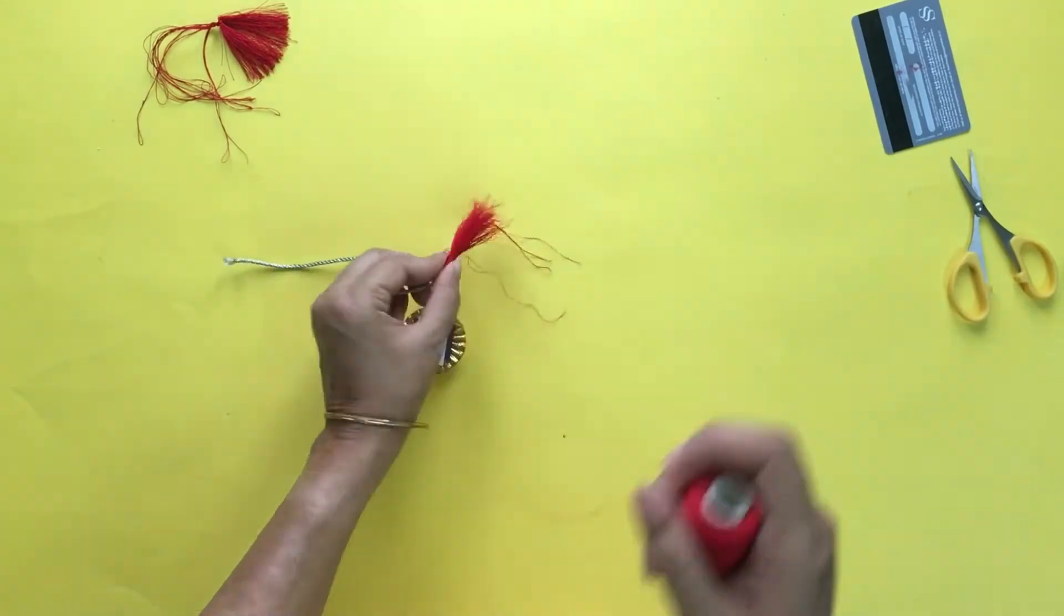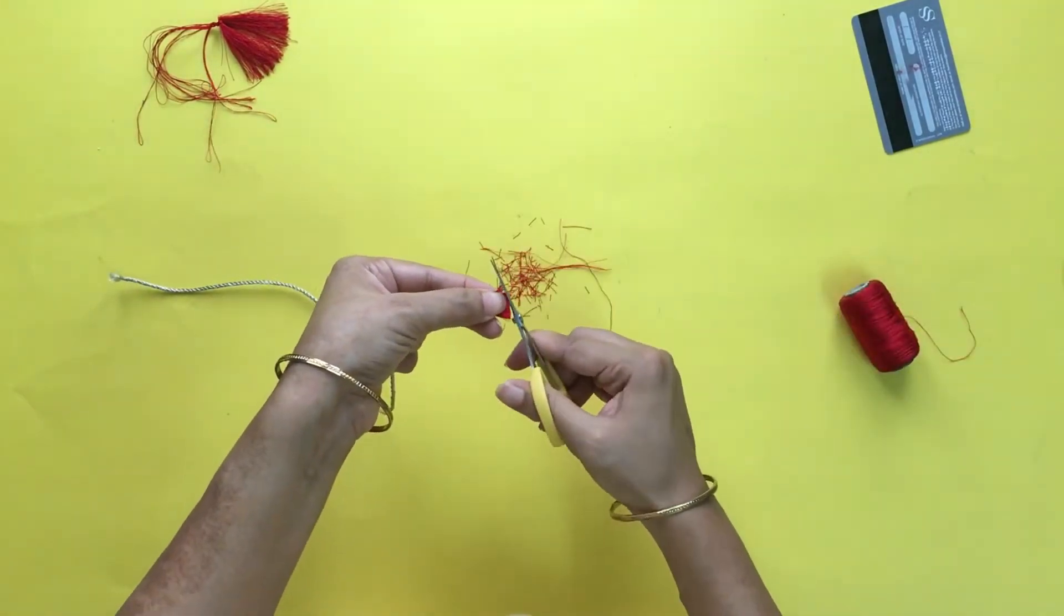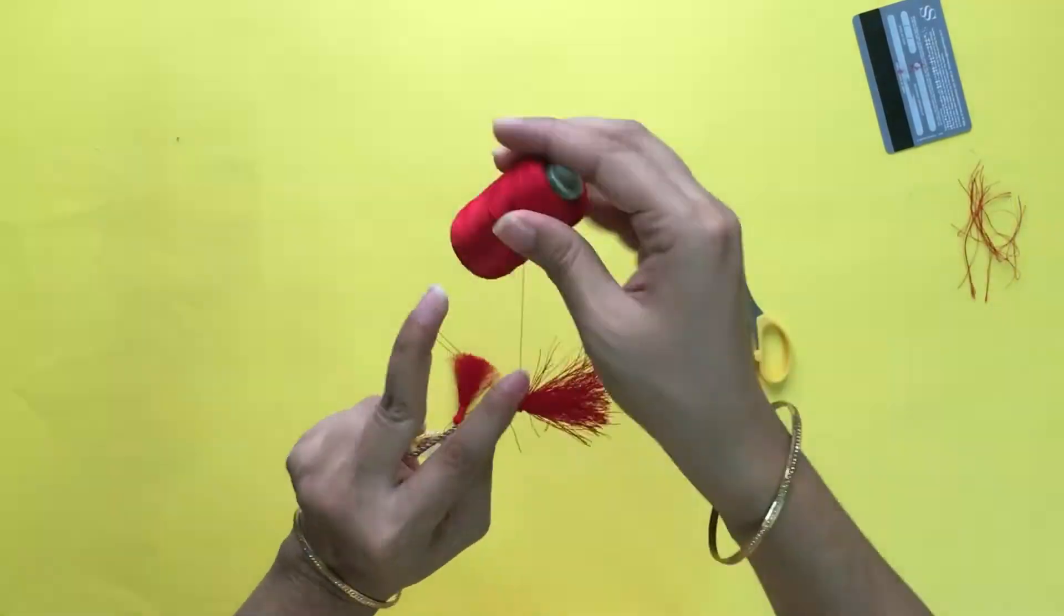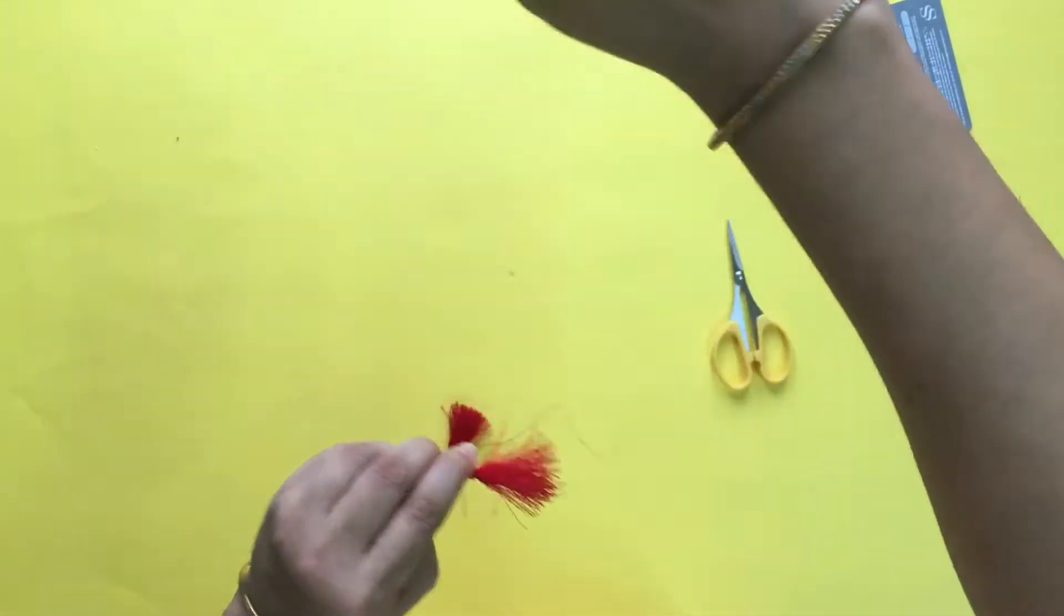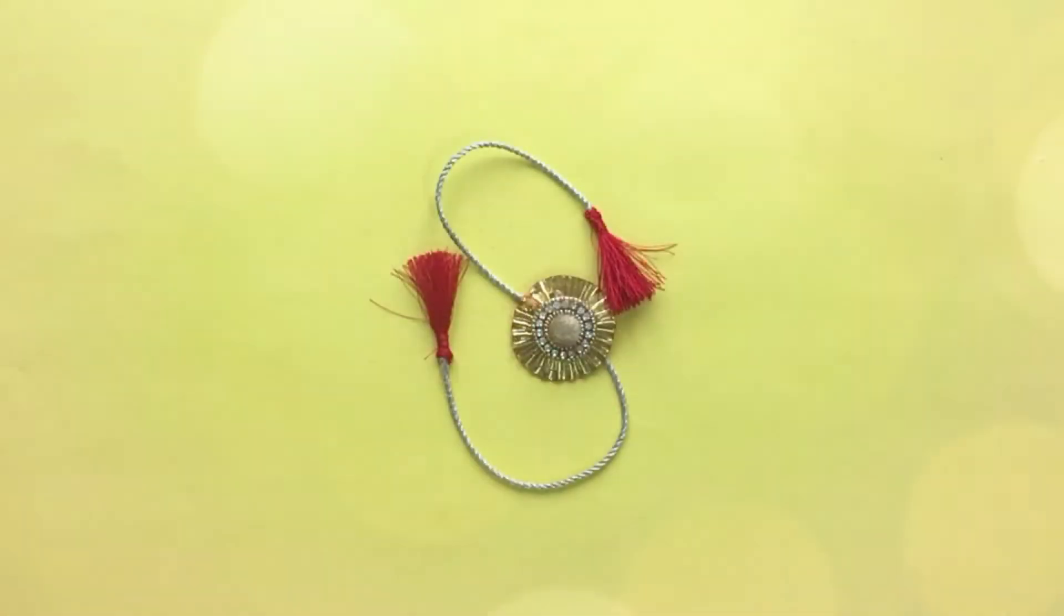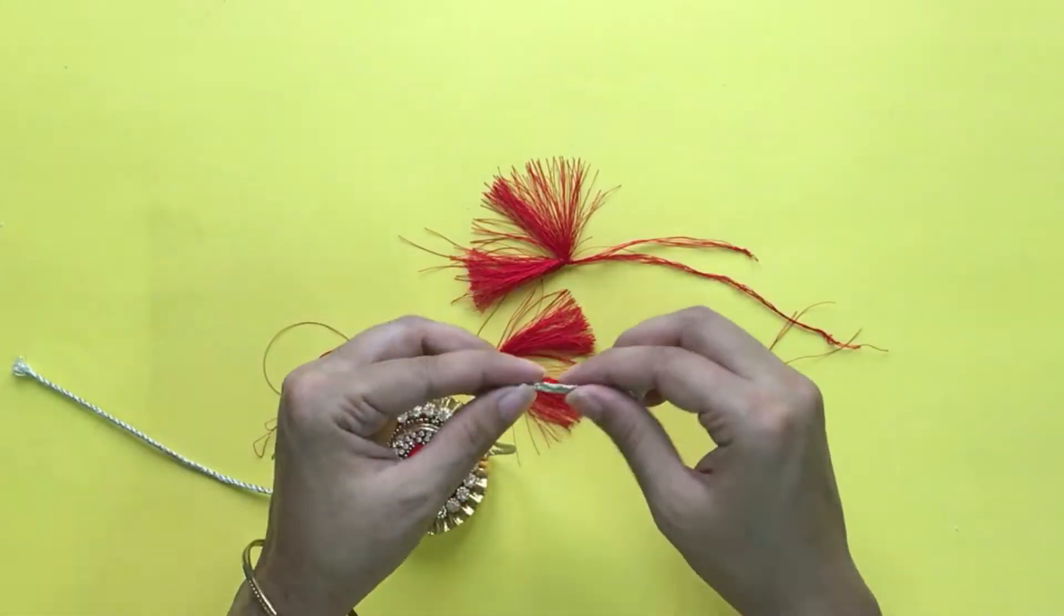Next is cut the extra threads from the bottom of the tassel. Follow the same on the other side of the Rakhi as well. And the same is to be followed for the second Rakhi.